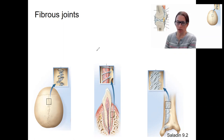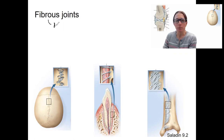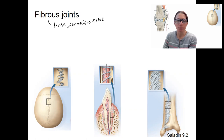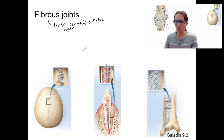The first type of structural classification I'll talk about is fibrous joints. These are joints where two bones are connected by a dense fibrous connective tissue — typically dense regular connective tissue, so a pretty parallel fiber situation. There are three types of fibrous joints.